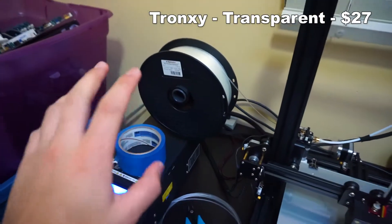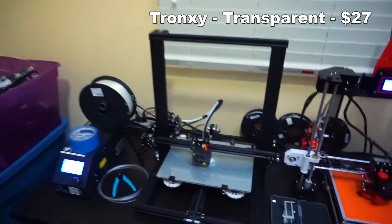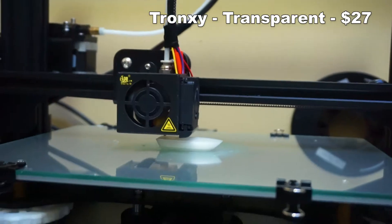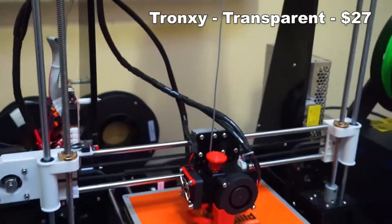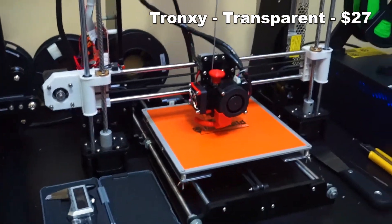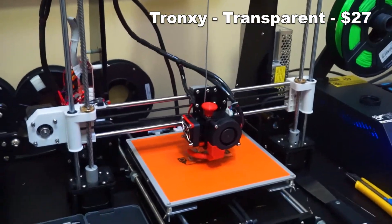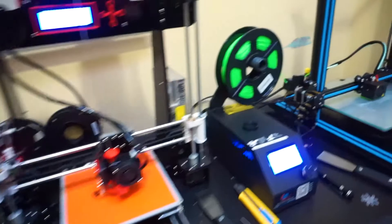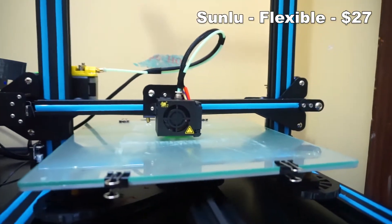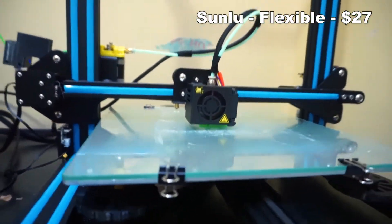And then what we have here is a Tronxy transparent filament. Once again, pretty awesome. And so far, it's actually turning out quite well. Over here, we have the Anet A8, which I had a lot of trouble calibrating and getting it to work again. And then, finally, we have flexible green filament. And that is where things get really interesting.